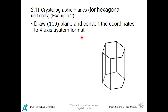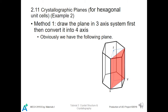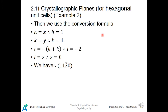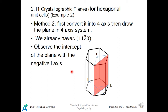Example 2: Draw a (1, 1, 0) plane in a 3-axis coordinate system and convert the coordinate to 4-axis system format. For the first method, we draw the plane in the 3-axis system first, then convert it to 4-axis. We set up the x-y-z coordinate; the x-intersection is 1, the y-intersection is 1, and the z-coordinate is 0 because there is no intersection between the z-axis and the plane. Using the conversion formula, we get the 4-axis coordinate: (1, 1, 2-bar, 0).